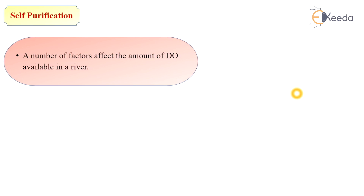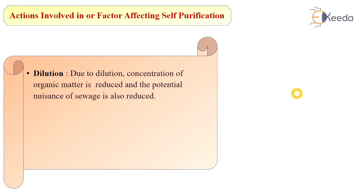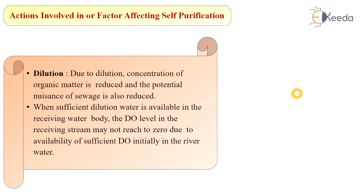A number of factors affect the amount of dissolved oxygen available in a river. The first is dilution. Due to dilution of river or any water body, the concentration of organic matter is reduced and the potential nuisance of sewage is also reduced. When sufficient dilution water is available in the receiving water body, the dissolved oxygen level in the receiving stream may not reach zero due to the availability of sufficient dissolved oxygen initially in the river water.